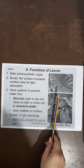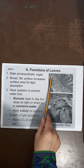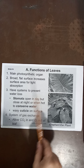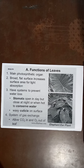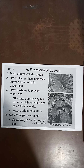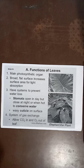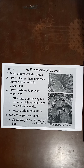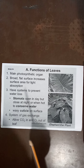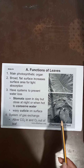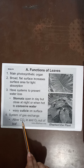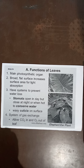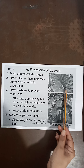Another organ present in the shoot system is the leaves. Leaves are called the photosynthetic part because they contain chlorophyll. It is the chlorophyll which traps the energy of the sun, and this energy is used in the chemical combination of carbon dioxide from the air and water from the soil, which is then converted into glucose — the food for the plant. This process is also carried out in the leaves.